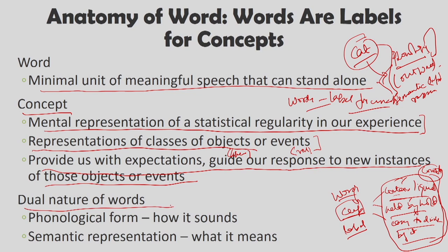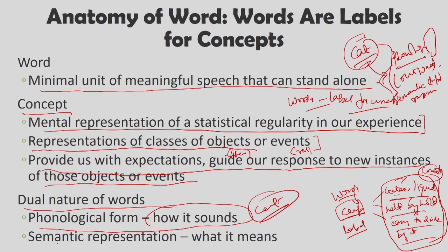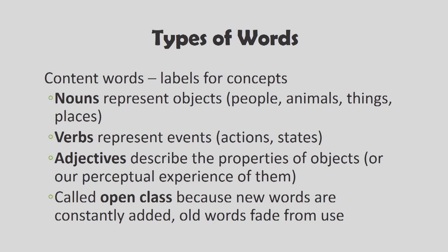Words are believed to have a dual nature. A word has a phonological form — how it sounds. For 'cat,' this is a monosyllabic word sounding like K, A, and T. It also has a semantic representation — what it means. Cat means a feline animal used as a pet that eats, runs after mice, and so on. So how a word sounds and what it means are the two basic forms of any word. A word is a meaningful speech unit which is basically a label for concepts with these two different forms.